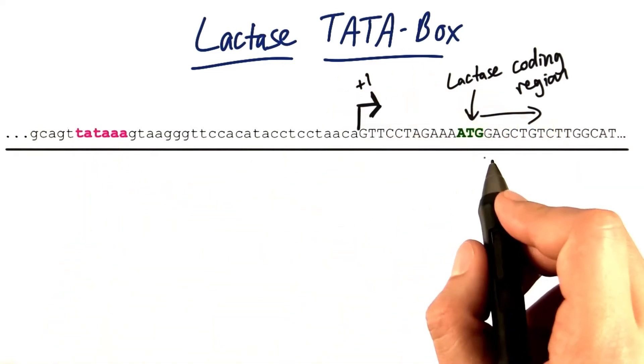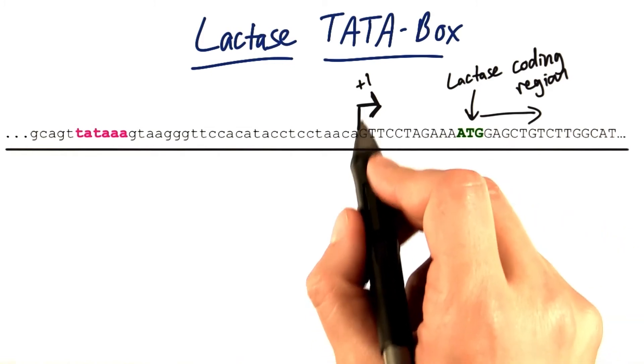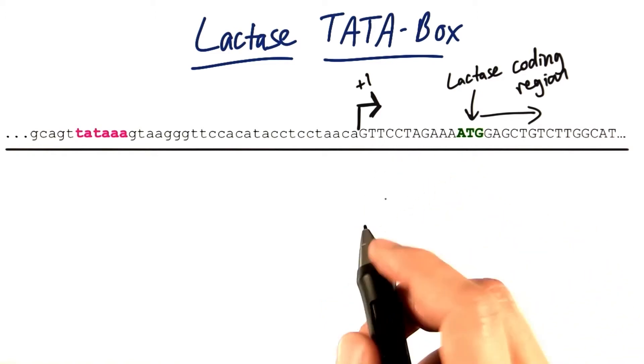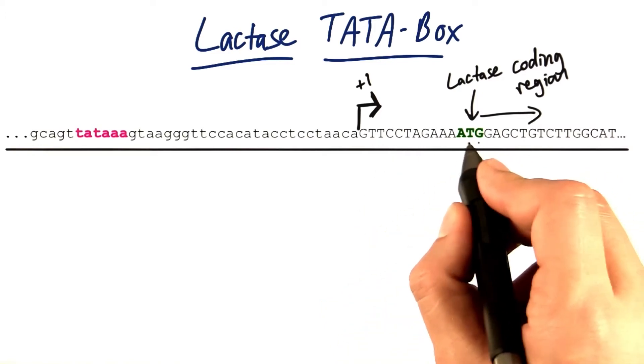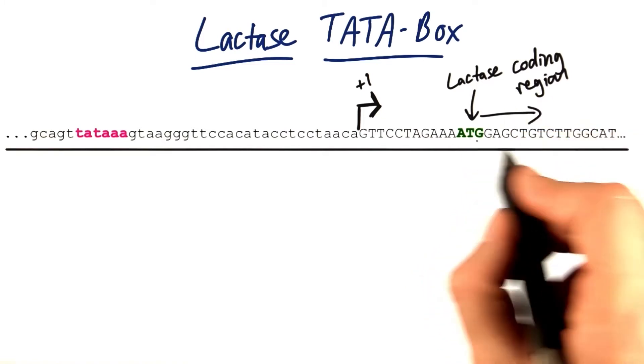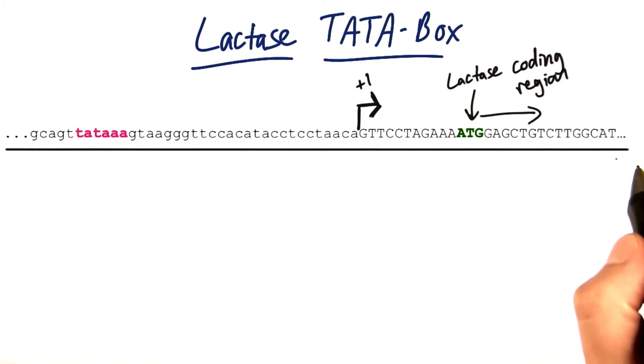And it's also real in the lactase gene. Here we have the plus one transcription start site in the lactase gene. That's where I started capitalizing the letters. In green here we have the ATG, which would be transcribed to the AUG in the mRNA. This would be where translation would start for the lactase coding region, and we'd get our protein.